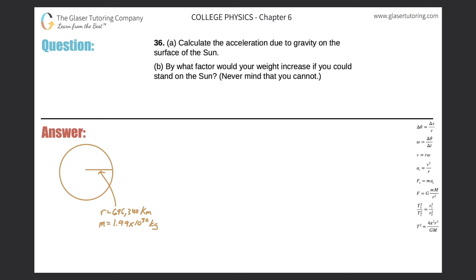Number 36, letter A. Calculate the acceleration due to gravity on the surface of the sun. Alright, so I have the sun over here on the left. It has a radius of almost 700,000 kilometers, and this particular mass.